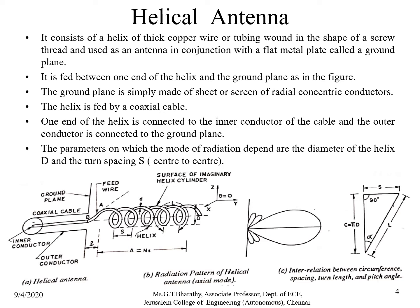The mode of radiation depends on the diameter of the helix (capital D) and the turn spacing (capital S), which is the center-to-center spacing between turns. We also have small L, which is the distance between the ground plane and the actual helix, and small d, which is the thickness of the screw helix thread. The second diagram shows the radiation pattern of the helix, which has a unidirectional pattern.